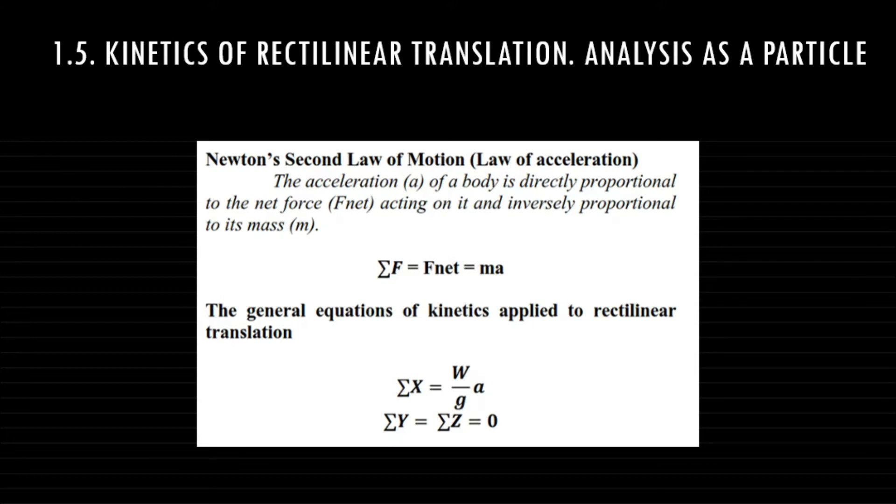For this specific topic we are going to apply the general equations of kinetics applied to translation, which are summation of X equals W over g times a, which is similar to F_net equals ma. So instead of m we use W over g and instead of F_net we are going to use summation of X.